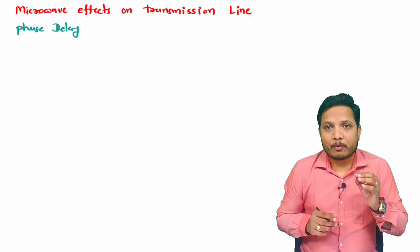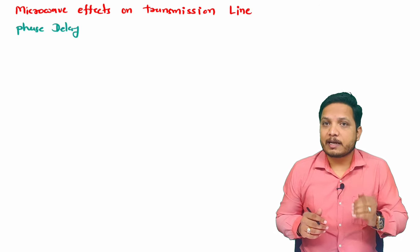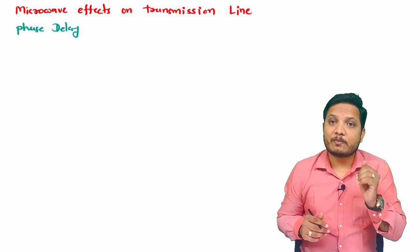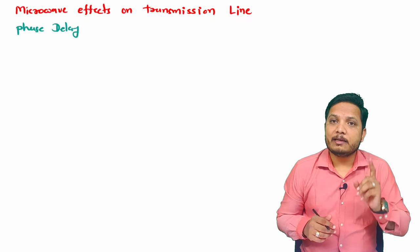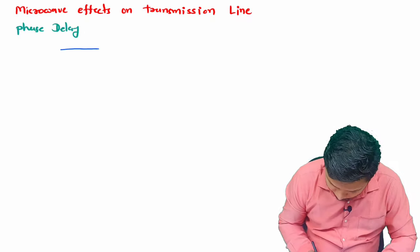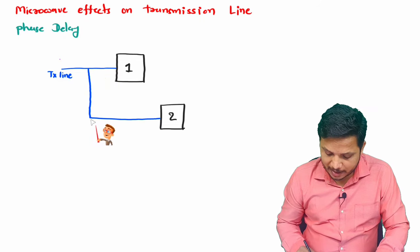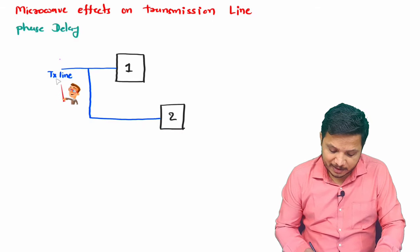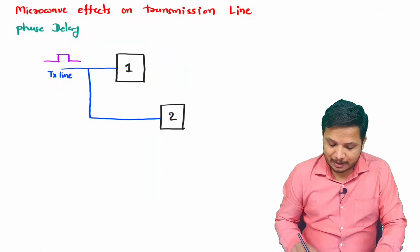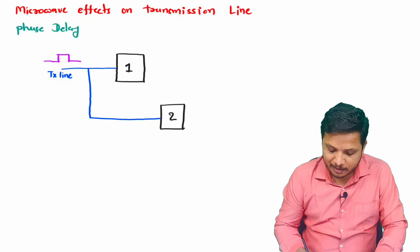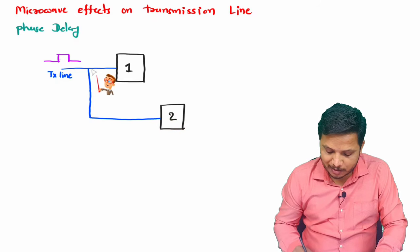When we send a signal using a transmission line to different components of a circuit, the length of the transmission line is very essential. To explain that, let's consider two different blocks connected with the same transmission line but with different lengths. The transmission line shown in blue is sending one microwave signal — the length to block one is short, but the length to block two is longer.